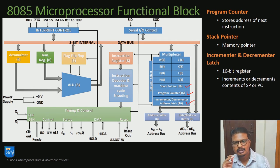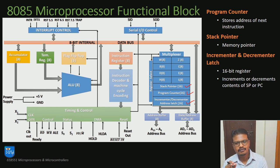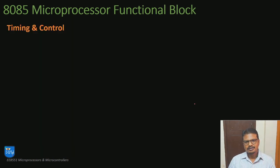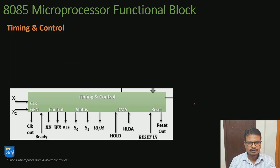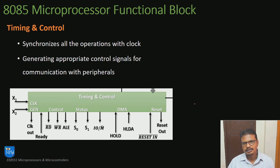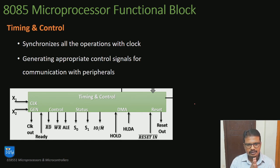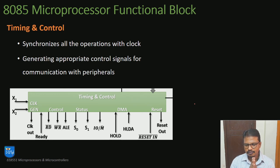Next in the pipeline is the incrementer and decrementer address latch. This is a 16-bit hardware register used for incrementing and decrementing the program counter and stack pointer. The next block is the timing and control block. The 8085 microprocessor is a synchronous sequential digital circuit, and this timing and control block synchronizes all operations with the system clock, generating appropriate control signals for communication with peripherals.